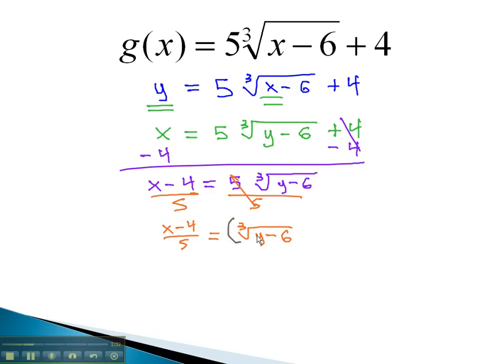x minus 4 over 5 is equal to the cube root of y minus 6. Now that the radical is alone, we can clear a root with an exponent by cubing both sides. Let's leave this expression cubed, as there is no advantage to multiplying it out. We'll leave it as x minus 4 over 5 cubed equals y minus 6.